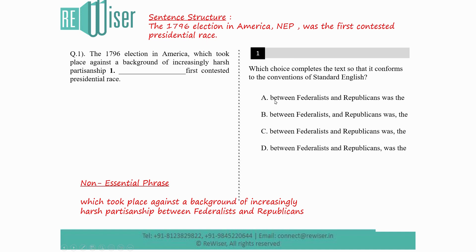Option A: between the Federalists and Republicans was the. If you look at Option A, it does not place a comma after 'Republicans,' meaning the non-essential phrase has no closing comma. You need the phrase to end after 'Republicans' so that the main subject 'the 1796 election in America' agrees with the verb. Option A can therefore be eliminated.